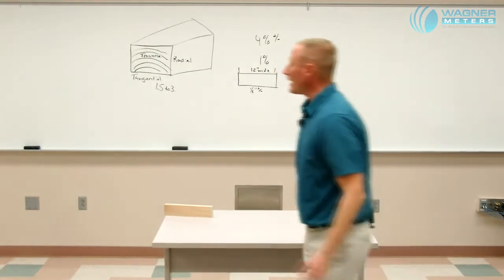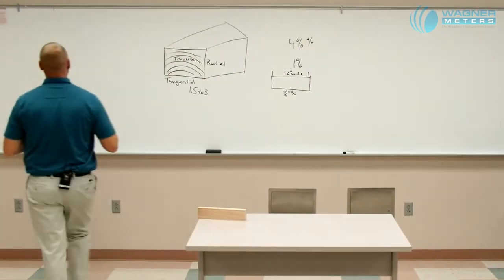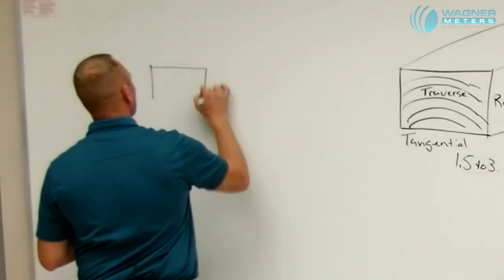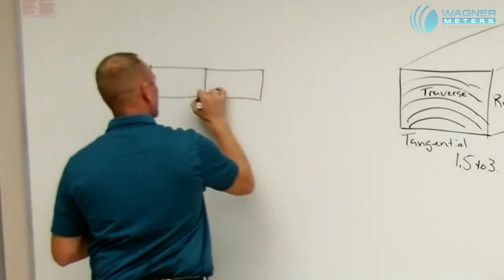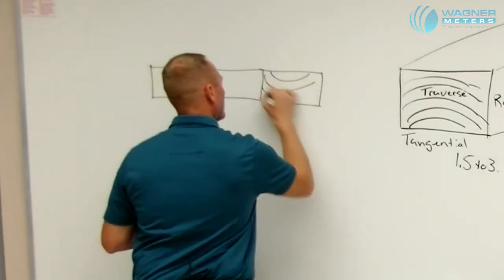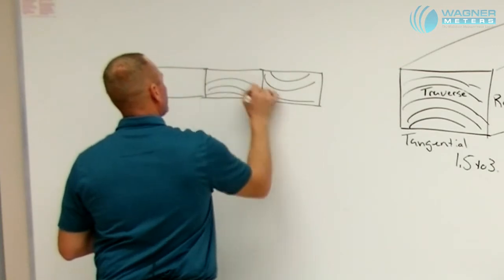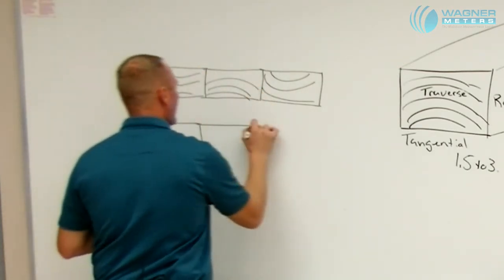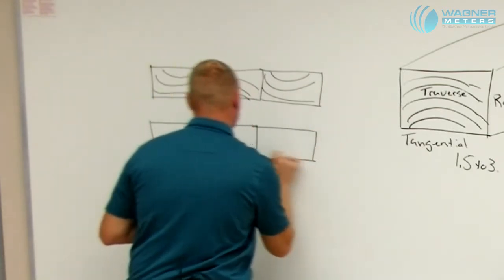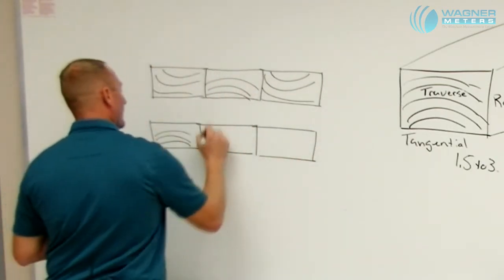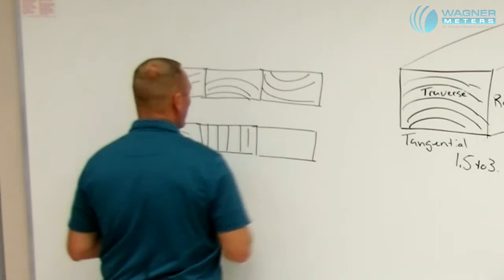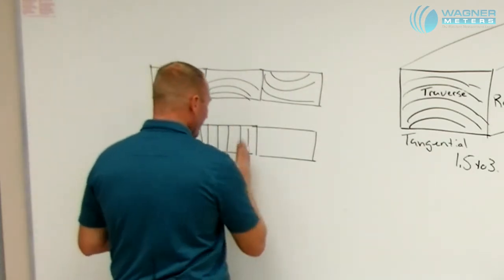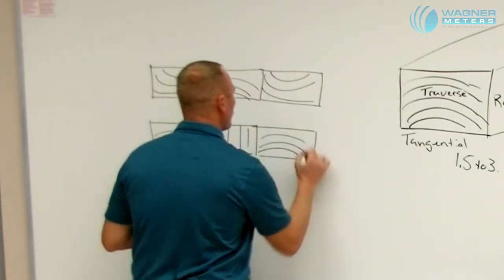But if we were to change that and go from a plain sawn, three plain sawn boards, to three boards that have a variation of grain, such as a plain sawn board, a quarter sawn board, or where the grain direction is running up and down, to back to a plain sawn board...